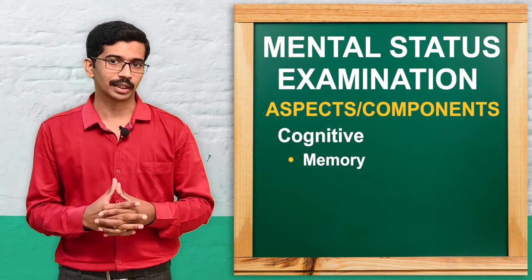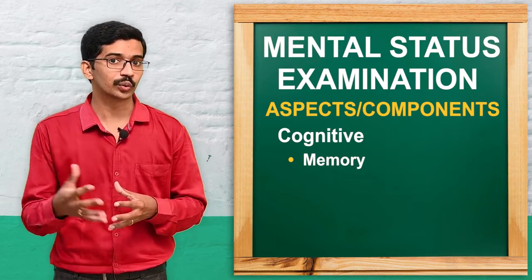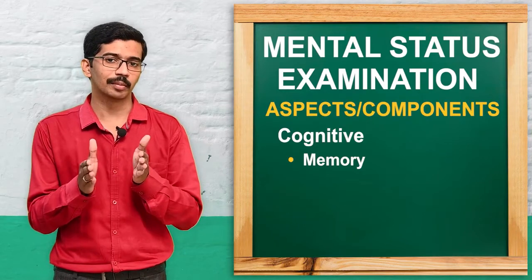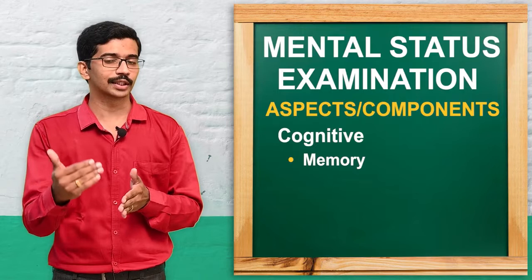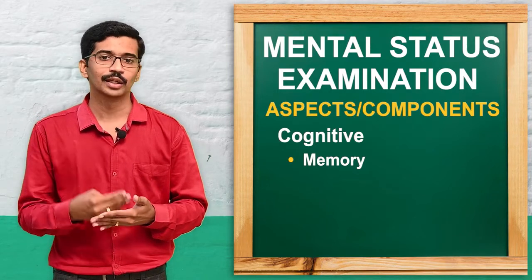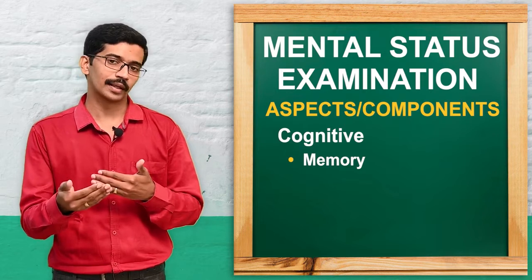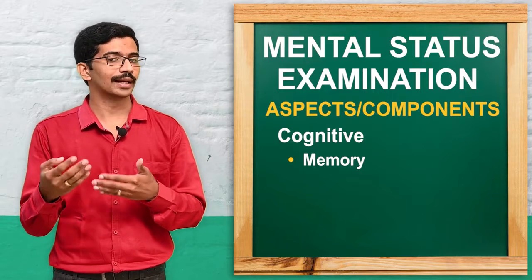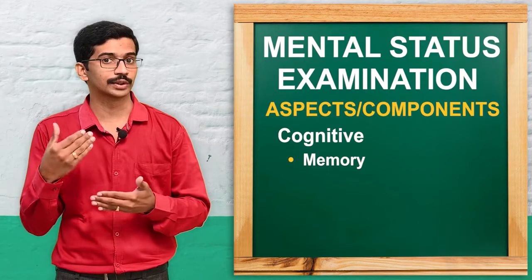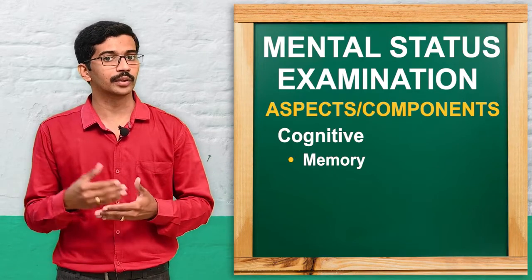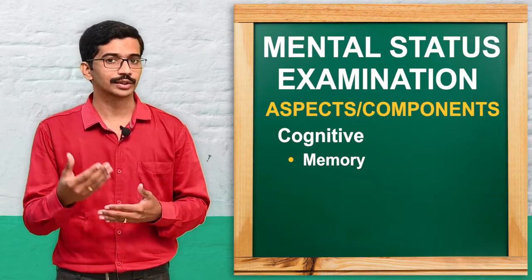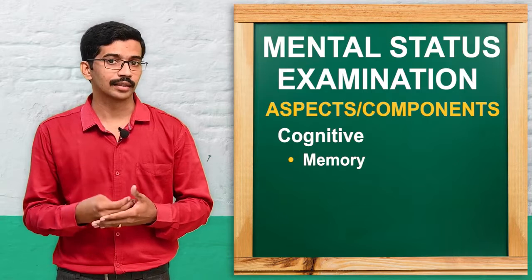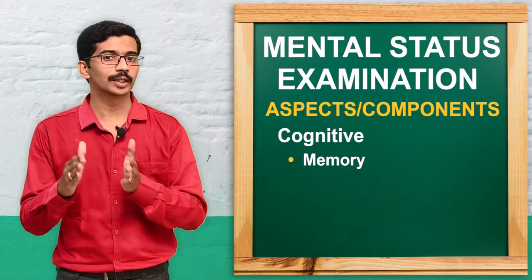Next we assess memory — the ability to recall. We assess immediate memory, recent memory, and remote memory. Immediate memory refers to what happened within the last few minutes; you can ask the patient to repeat words given during the attention and concentration task. For recent memory, ask what they had for breakfast or dinner the previous night. For remote memory, ask about past events — when they completed their 10th or 12th standard, their marriage date, or the date of birth of their child.